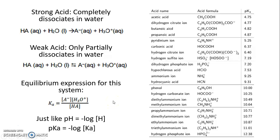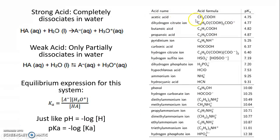The extent to which this acid dissociates is determined by its equilibrium constant, which we call Ka. It's the same as the equilibrium constant we've used before. You take the conjugate base times the hydronium ion concentration over HA, and that equals Ka. Just like pH is the negative log of H⁺ concentration, pKa equals the negative log of Ka.